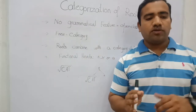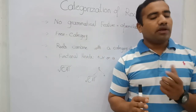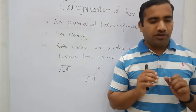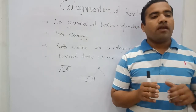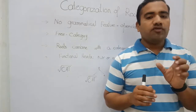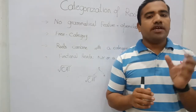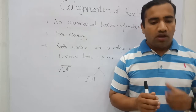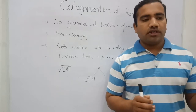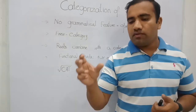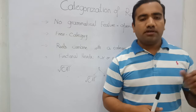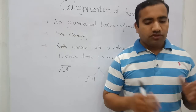We have claimed that roots are the open-class category. Roots don't have any features, but roots do have some categories. The point is: how we can categorize the roots? How we can say that this is a particular word that is a noun, this is a particular word that is a verb, and this is a particular word that is an adjective? This is the problem.